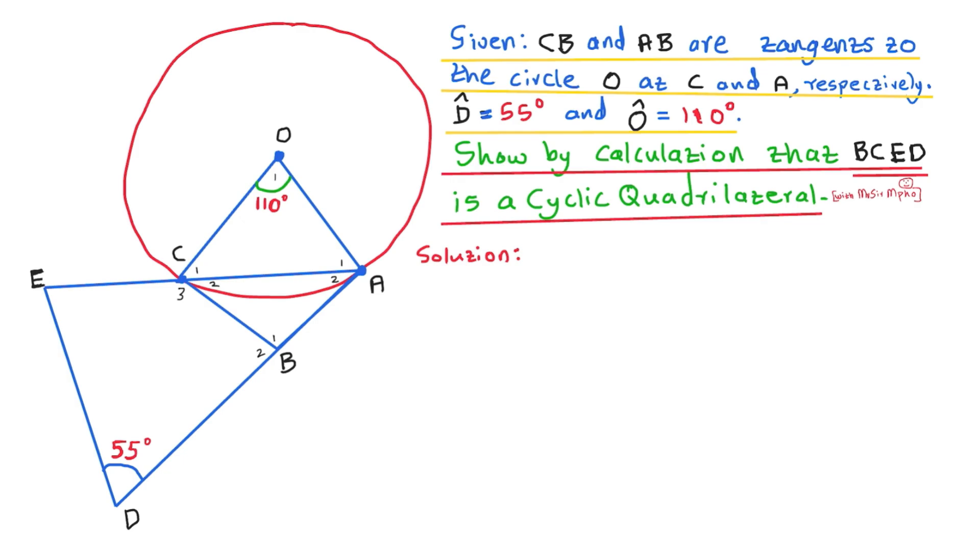So they are telling us to show by calculation that BCED is a cyclic quad. B, C, E, D is this one. This one here. They want us to prove that this is a cyclic quad. If you want to prove if a shape is a cyclic quad, you need to use one of the properties that I mentioned in video part A. But here you can see that amongst the properties that I mentioned, we're going to use the exterior angle of a cyclic quad.